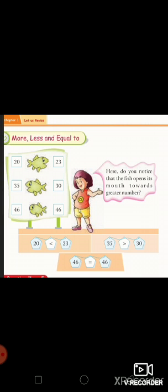Now we will read these numbers with the given symbols. So, 20 is less than 23, 35 is more than 30, and 46 is equal to 46.